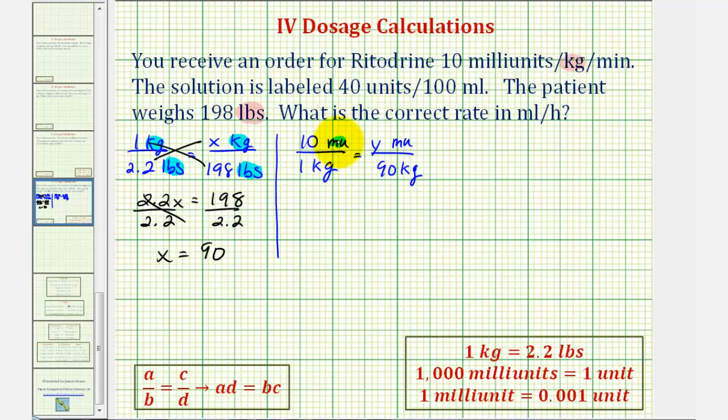Once again, we have the same units on top, same units on the bottom, so we can cross multiply and solve for y. So 1 times y is y, 10 times 90 is 900, which means the patient needs 900 milliunits per minute.